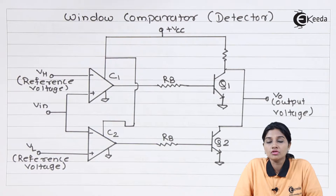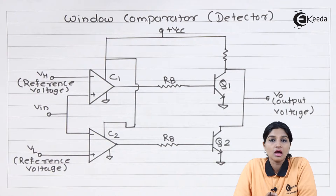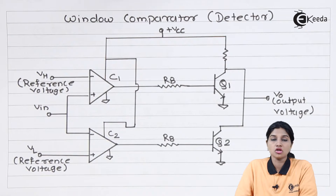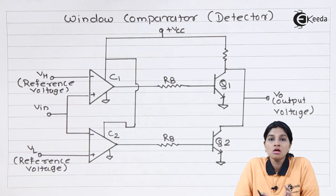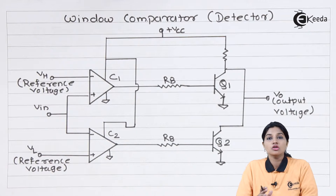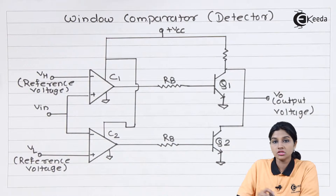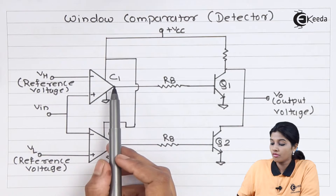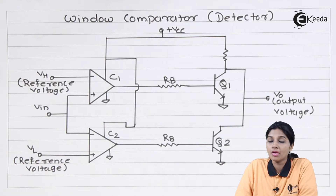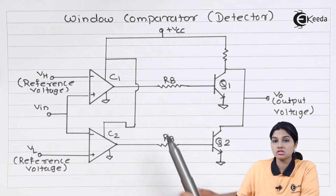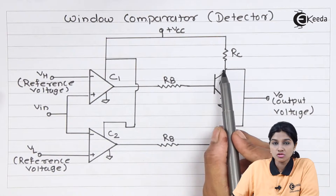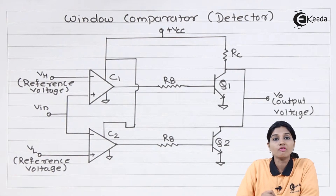To understand the circuit of the window detector, first consider the circuit diagram. The two reference voltages are VH and VL. VH provides the higher level reference voltage and VL provides the lower level reference voltage. VH and VL are applied to the inverting and non-inverting input terminals of comparators C1 and C2. V_in is applied to the non-inverting and inverting input terminals of comparators C1 and C2. The output of both comparators is applied to transistors Q1 and Q2 through resistor RB. The final output is taken at the collector of both transistors, with the collectors of Q1 and Q2 combined together.